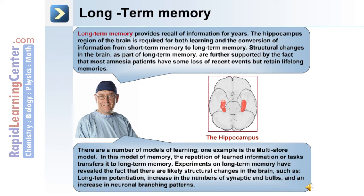There are a number of models of learning. One example is the multi-store model, in which the repetition of learned information or tasks transfers it to long-term memory. Experiments on long-term memory have revealed that likely structural changes in the brain take place, such as long-term potentiation, an increase in the number of synaptic end bulbs, and an increase in neuronal branching patterns.